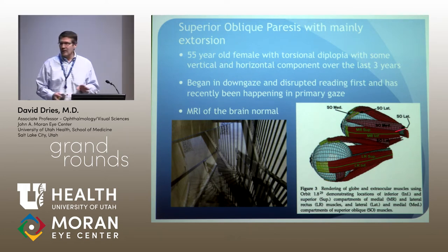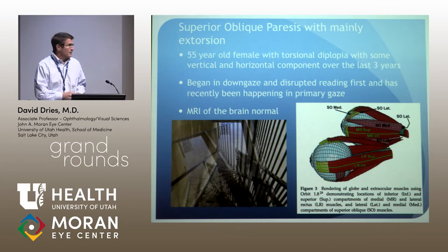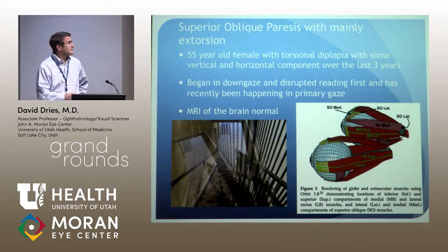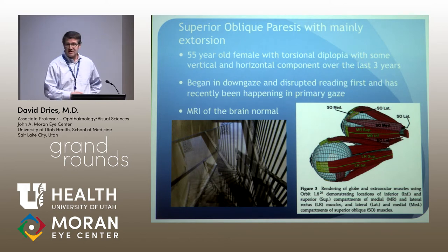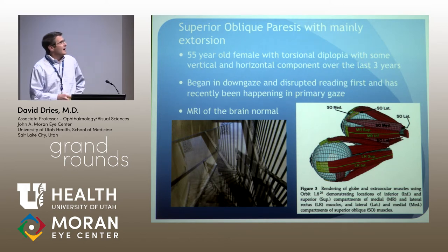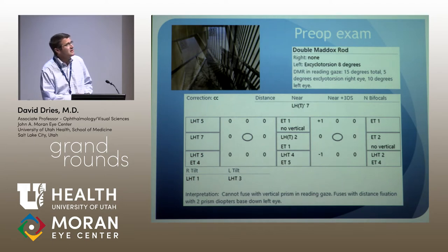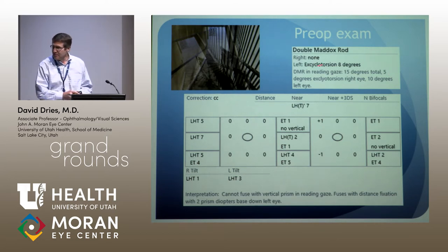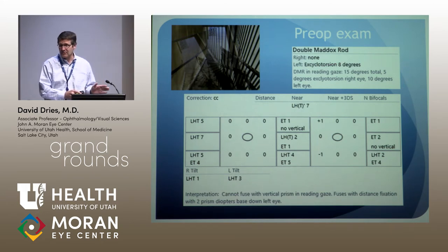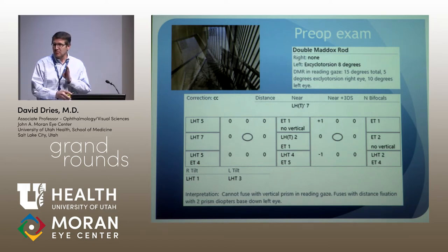So what does this mean clinically? What is it like to have torsional diplopia? This is a 55-year-old photographer who supplied this photoshopped photo of what it's like to walk down stairs at an apartment complex. The lateral compartment of the superior oblique has tendons inserting on the posterior fibers of the tendon, and the medial compartment inserts on the more equatorial anterior fibers. The lateral compartment has more depression function, and the medial compartment has more intorsion function.